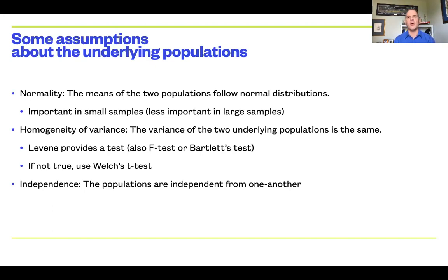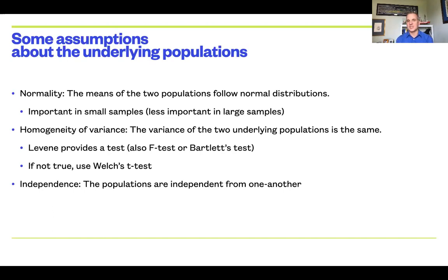Our next assumption is called the homogeneity of variance. That means the two populations from which our samples come share more or less equal variance. They may differ in terms of their means, but they don't differ in terms of their variance. The t-test is actually fairly robust against this — the inferences we make when the populations are not of equal variance typically don't differ too much. But the assumption is that they have equal variance; that's how the t-test works.